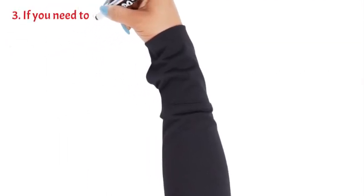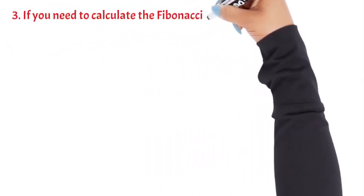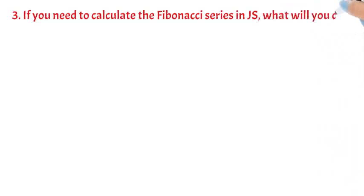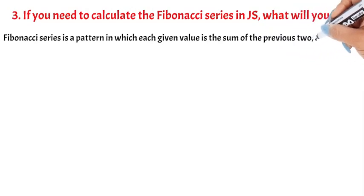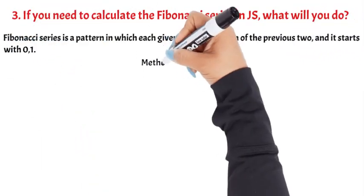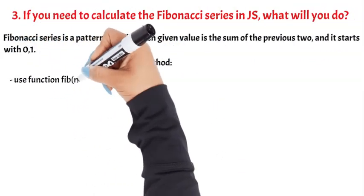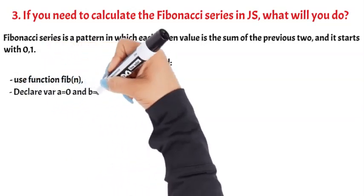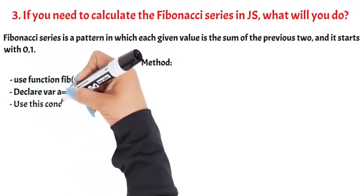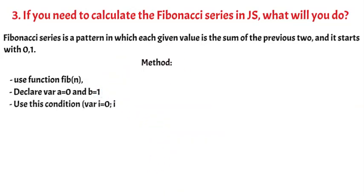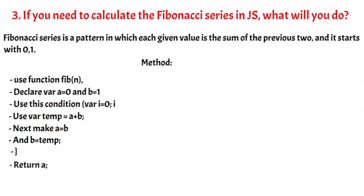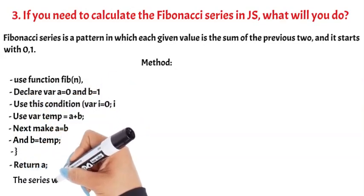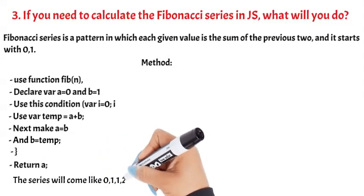Question 3: If you need to calculate the Fibonacci series in JS, what will you do? Fibonacci series is a pattern in which each given value is the sum of the previous two, and it starts with 0, 1. Method: Use function Fibon. Declare a equal 0 and b equal 1. Use this condition: for i equal 0. Use var temp equal a plus b. Next, make a equal b and b equal temp. Return a. The series will come like 0, 1, 1, 2, 3, 5.